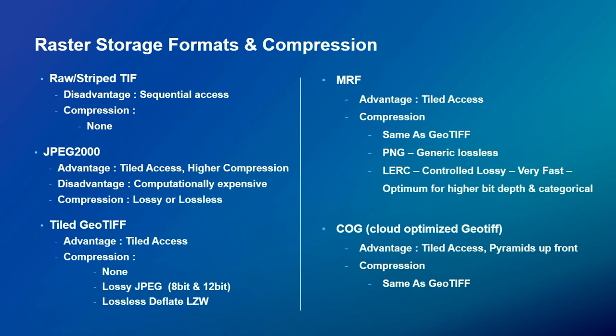One of the key issues when storing imagery in the cloud is the format you're using. On the left are formats we do not recommend: raw striped TIFF is not rapid to access, and JPEG 2000 has particular efficiency problems — sometimes reformatting becomes necessary. Tiled GeoTIFF is an improvement but wasn't intended for cloud storage. On the right are two formats we recommend, and that's where I want to focus.